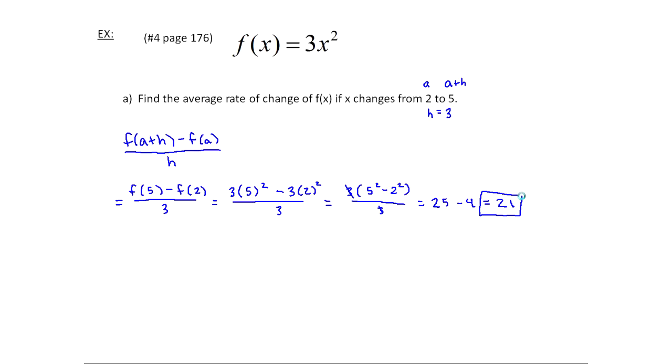So you can think of this in terms of units. So x went from 2 to 5, so x increased by 3 units, and when that happened on average, f(x) increased by 21 units. Again, it's an average rate of change because at each different point there's a slightly different rate of change.